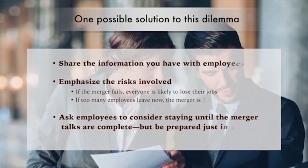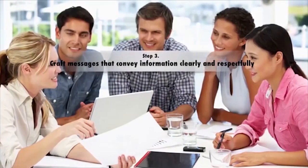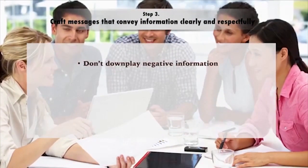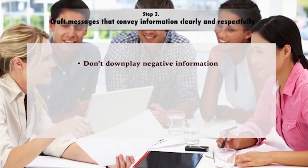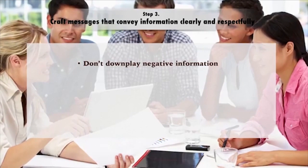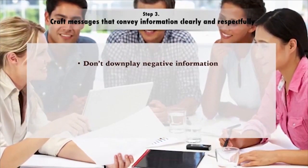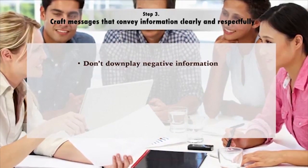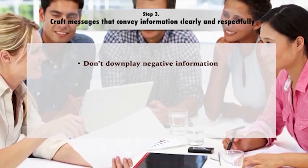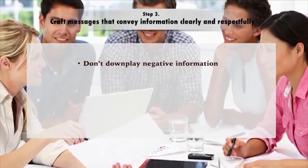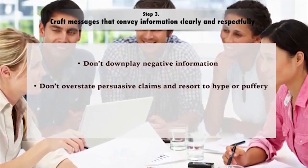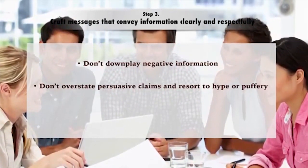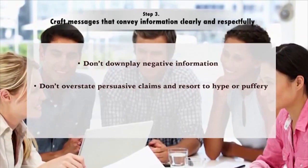If the merger talks fail and the company goes under, employees are ready to move and won't be blindsided. There are no easy ways out of dilemmas like this, but if you have given people the information they need, you have made the most ethical choice possible. Once you have decided what to tell your audience, the next step is to decide how to express it. When you have bad news to share, it can be tempting to downplay it to minimize emotional trauma. Don't go so far that you avoid telling the truth. With persuasive messages, there is a risk of overselling — be sure you can support every claim you make.